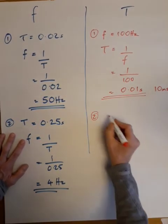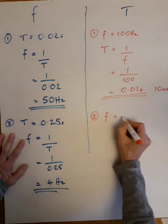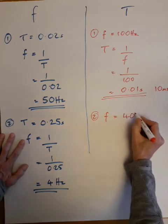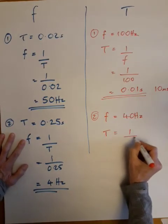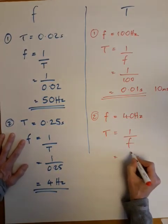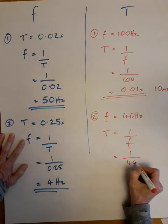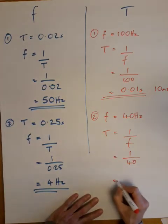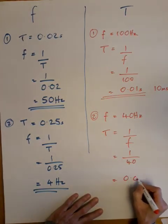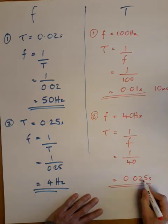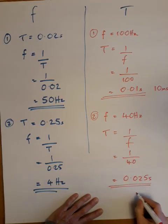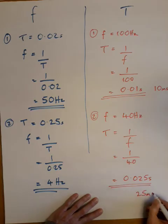Example 2: The frequency is 40 hertz. T = 1/F = 1/40 = 0.025 seconds. You could rewrite this as 25 milliseconds.